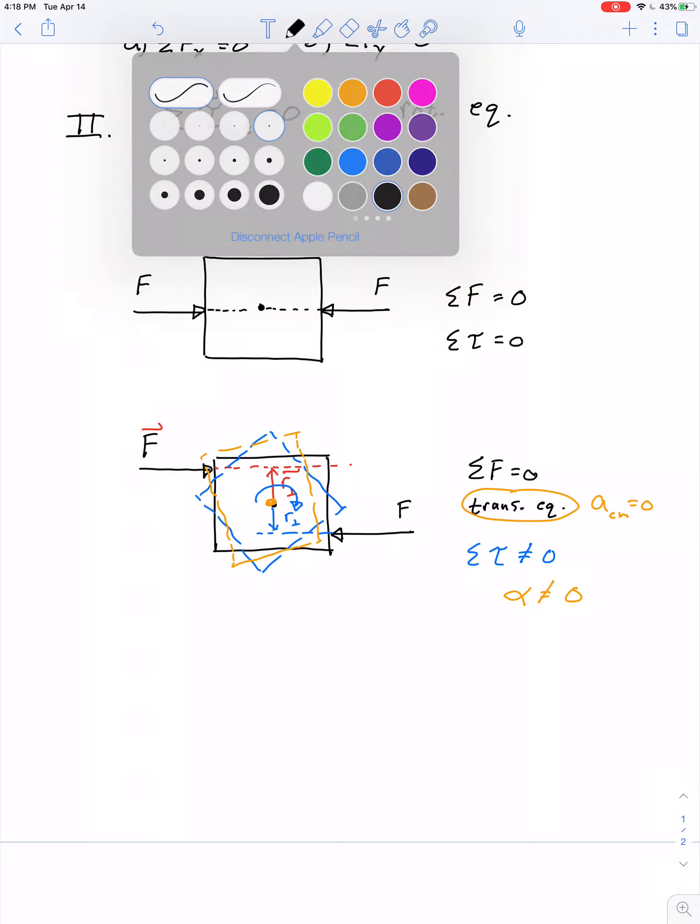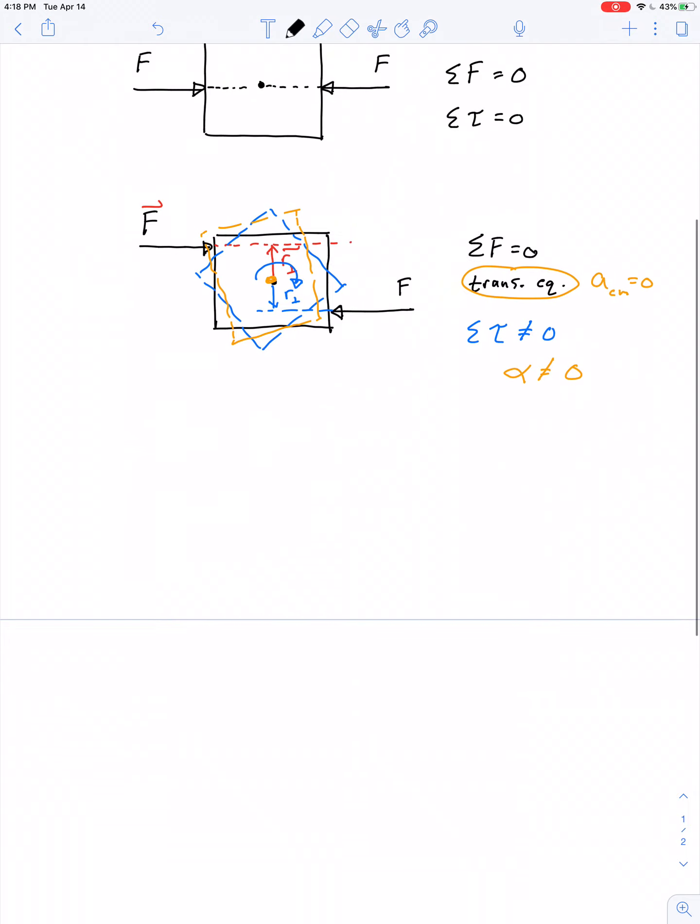Let's do some more examples. What if you had two forces, and they're not equal in magnitude? F1 pushing to the right is greater than F2 pushing to the left. Is there any sort of equilibrium here? Okay, so the net force is definitely not zero.